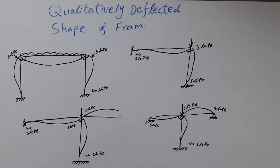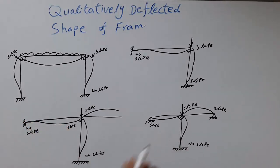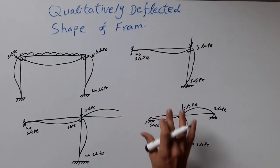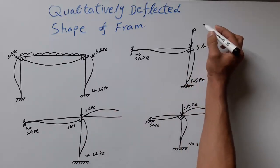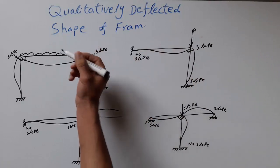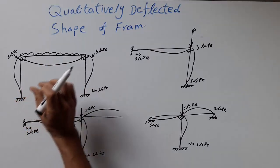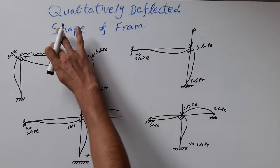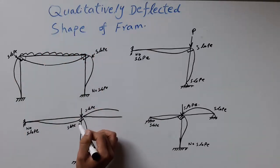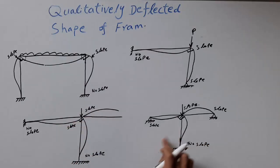So these are the four main frames with their qualitatively drawn deflected shapes. As you have seen in the diagrams, we don't have any unit for the force — this is just a P, not P equal to 5 or 6. Similarly with the UDL we just have a load without units like 3 kN per meter. The same applies to all four examples. That's it for today, thank you for watching — please don't forget to subscribe and we'll see you next time.